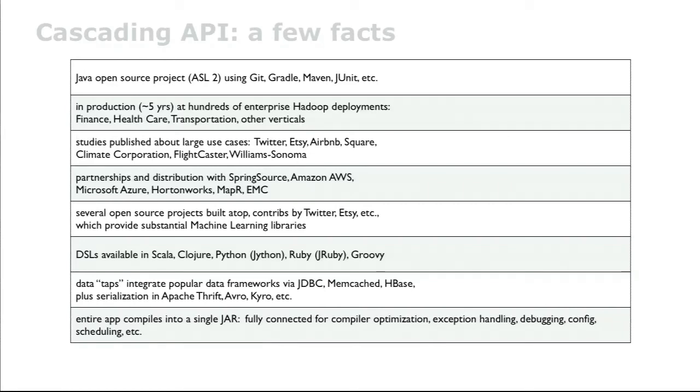A lot of finance, healthcare, transportation, some other verticals. As well, there are very large deployments at places like Twitter, Etsy, Climate Corp, Williams-Sonoma, Square. Most all of those have had articles out recently. Amazon has done a case study on Climate Corp, one of their biggest customers for Amazon Elastic MapReduce service. They've also done a case study on Flycaster, another big one.